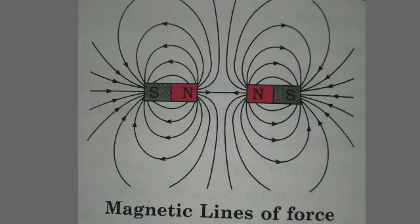Magnetic force is a vector quantity. So these are the properties of magnetic lines of force.